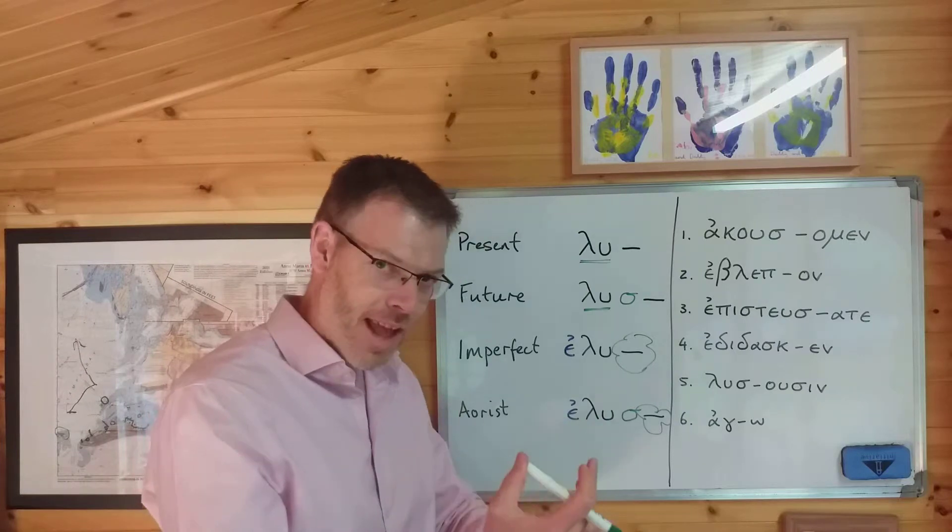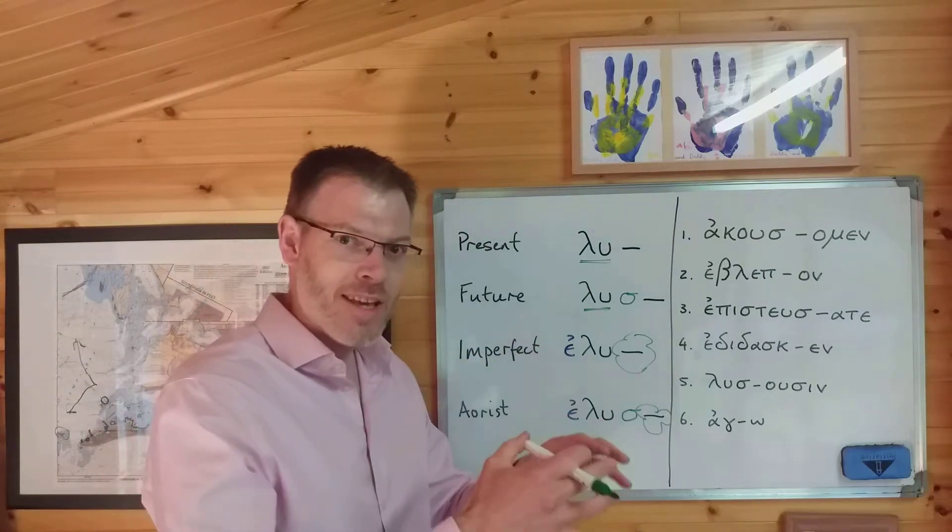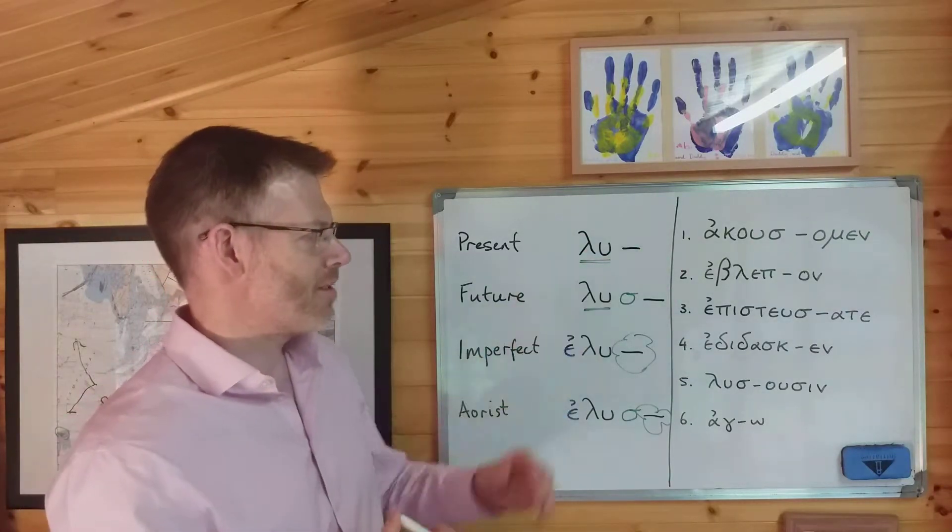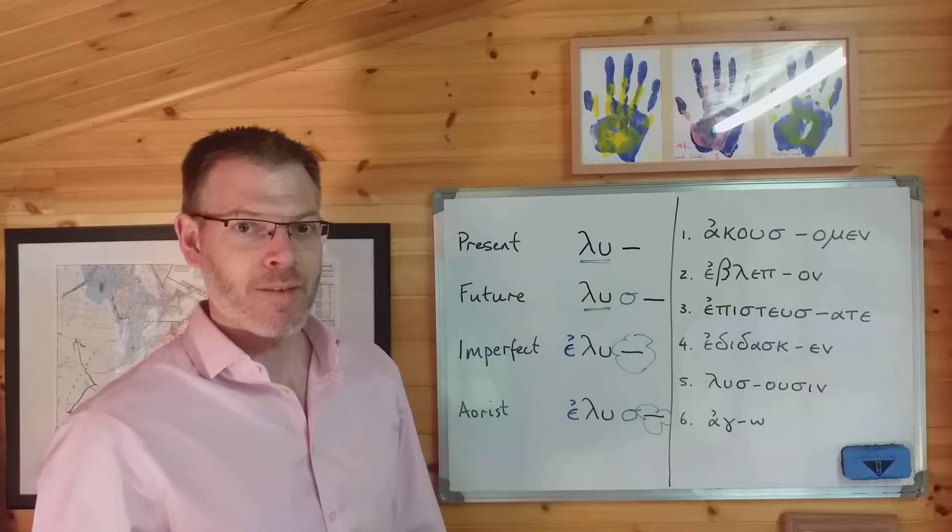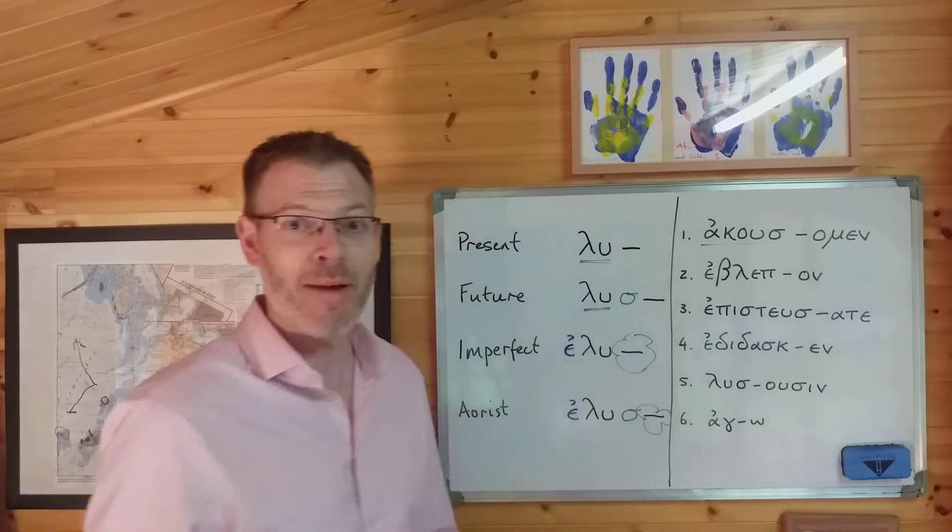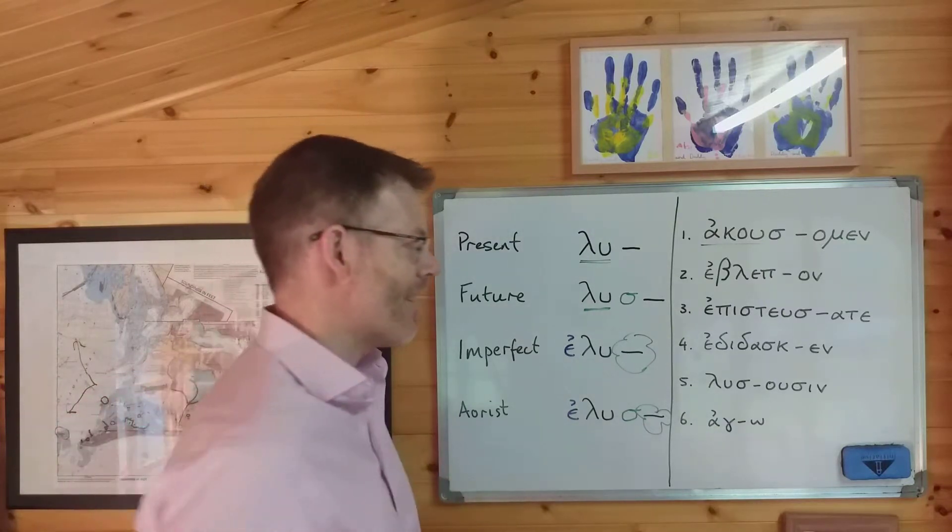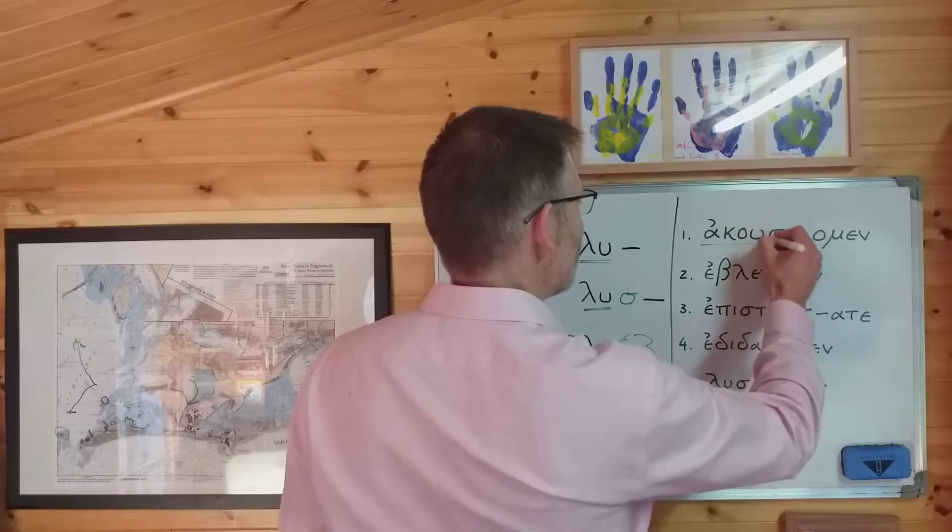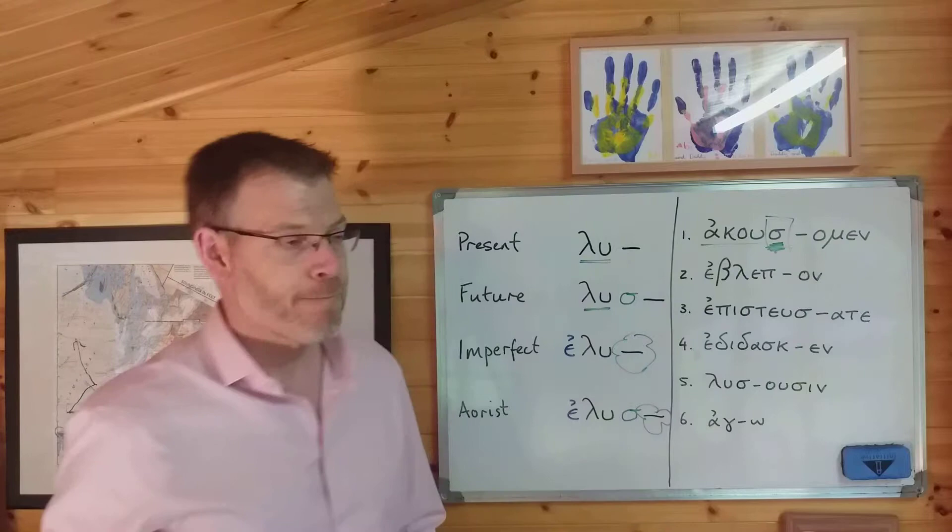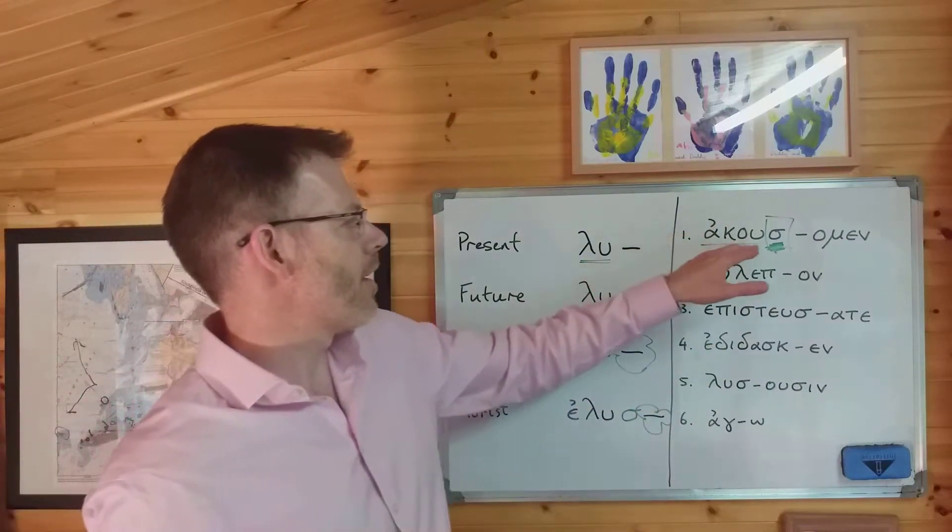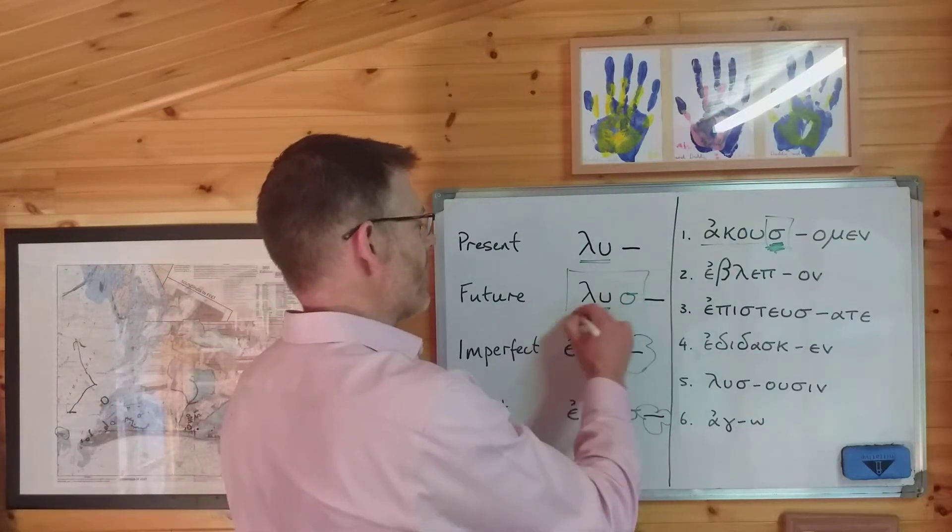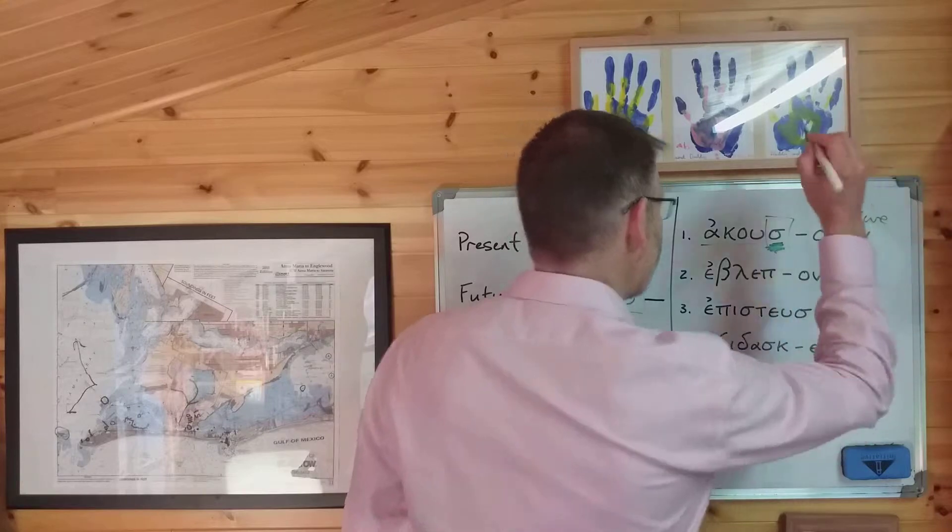Now look at number one and tell me what tense it's in. How do you do that? You find the stem and then you see, has it got an epsilon augment? Has it got a sigma suffix? So look at it. Find the stem. What's the stem? Obviously, the stem is ακου. It comes from the verb ακουω meaning I hear or I listen. But it's got a sigma suffix. Does it have an epsilon augment? No, it doesn't. It's just the alpha at the beginning. So it's got a sigma suffix, no epsilon augment, which means what tense is it in? It is in the future.